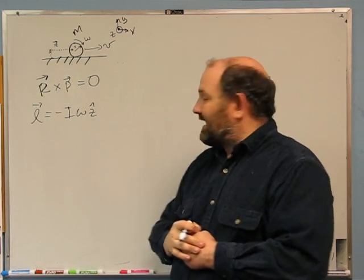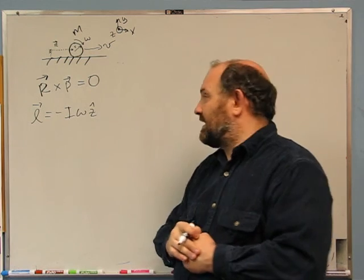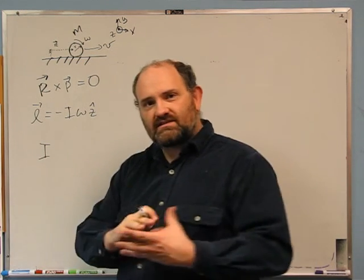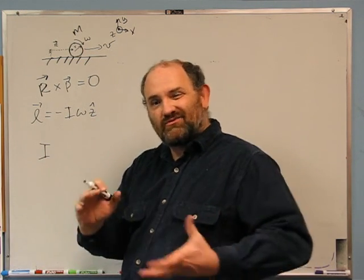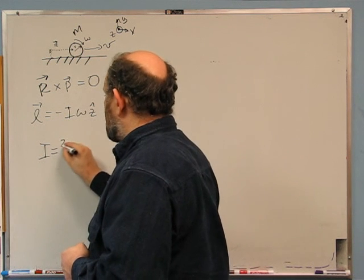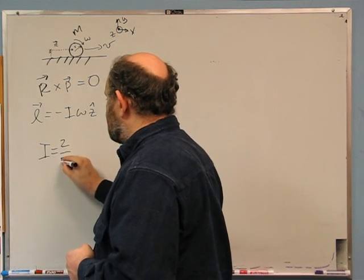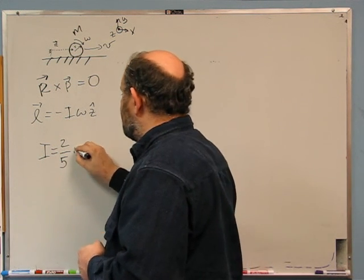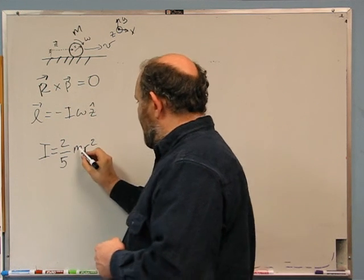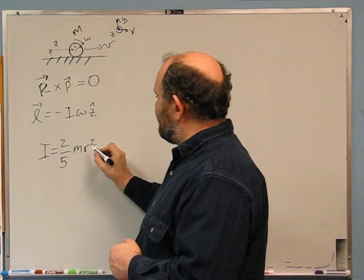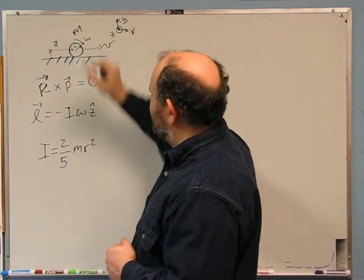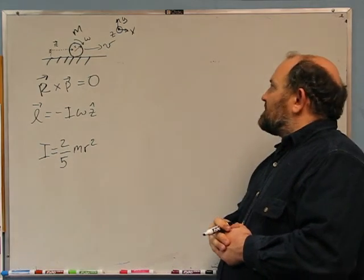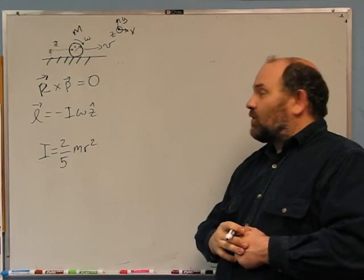So I know that my angular momentum is going to be minus I omega z-hat. I have to figure out I and omega. I isn't too hard — pool ball, let's assume it's a solid, uniform sphere, and the moment of inertia for a sphere is two-fifths m r squared, where m is the mass and r is the radius. So we need I.